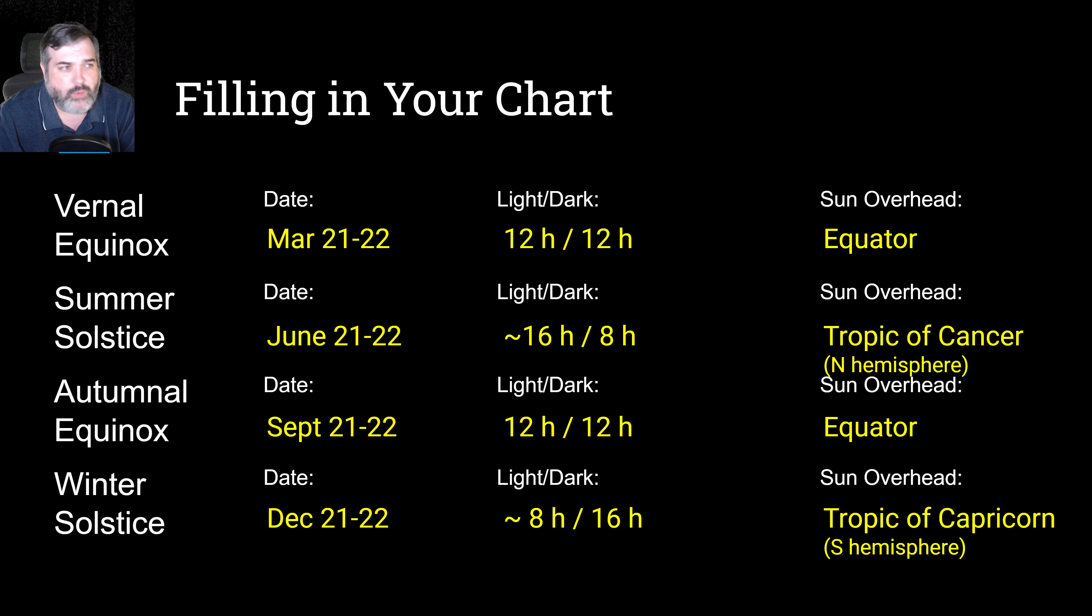So let's fill in your chart, and this is what it should look like. You can hit pause here, but I'm not going to read it all to you. But again, you know, the equinoxes should be about equal, 12 and 12, whereas the summer solstice here in the northern hemisphere, we're going to have the most amount of daylight, maybe as much as 16 hours. Whereas with the winter solstice, we're going to have the least amount of sunlight, which is, you know, 8, 9, 10 hours, something like that. And again, where is the sun directly overhead?